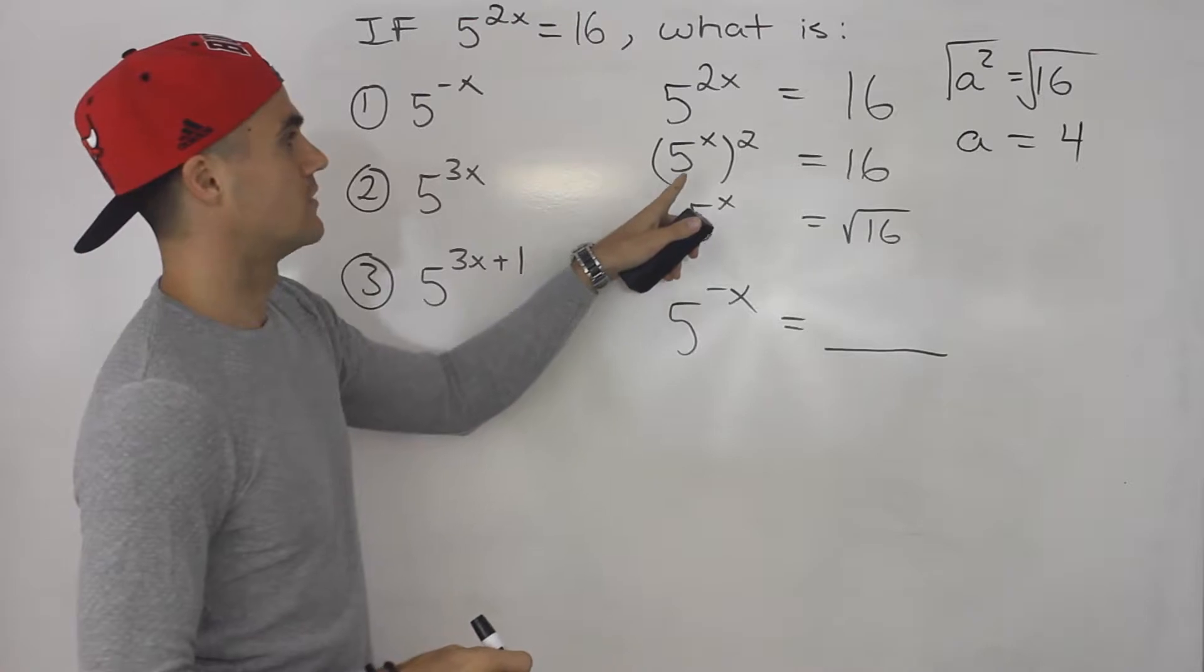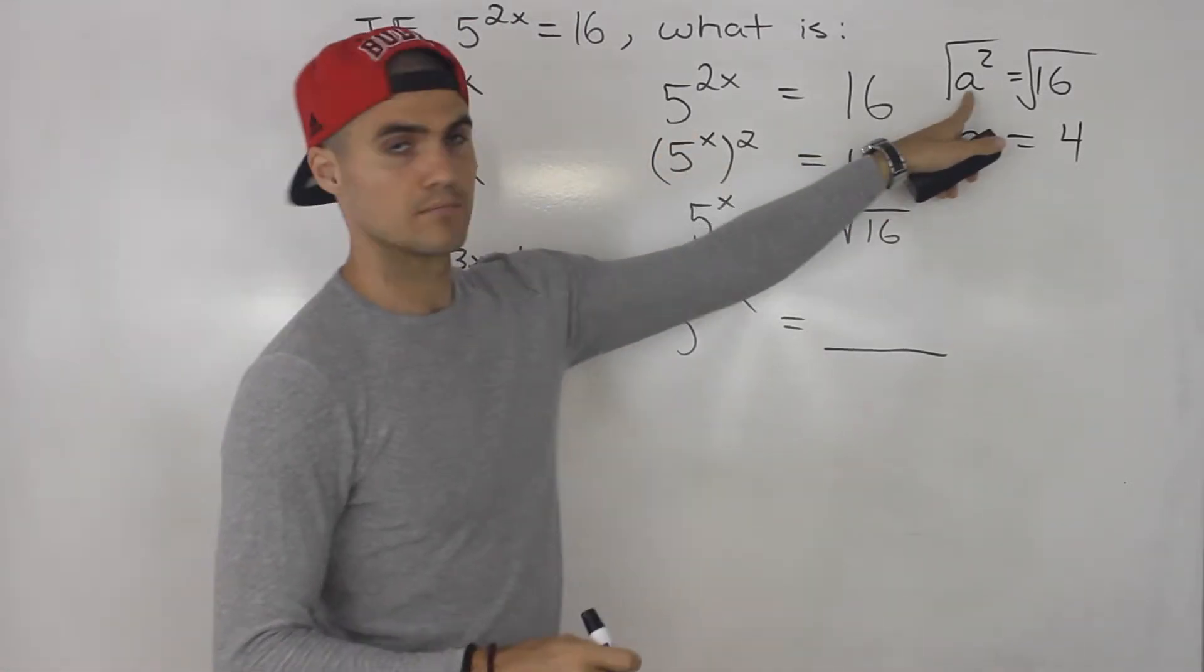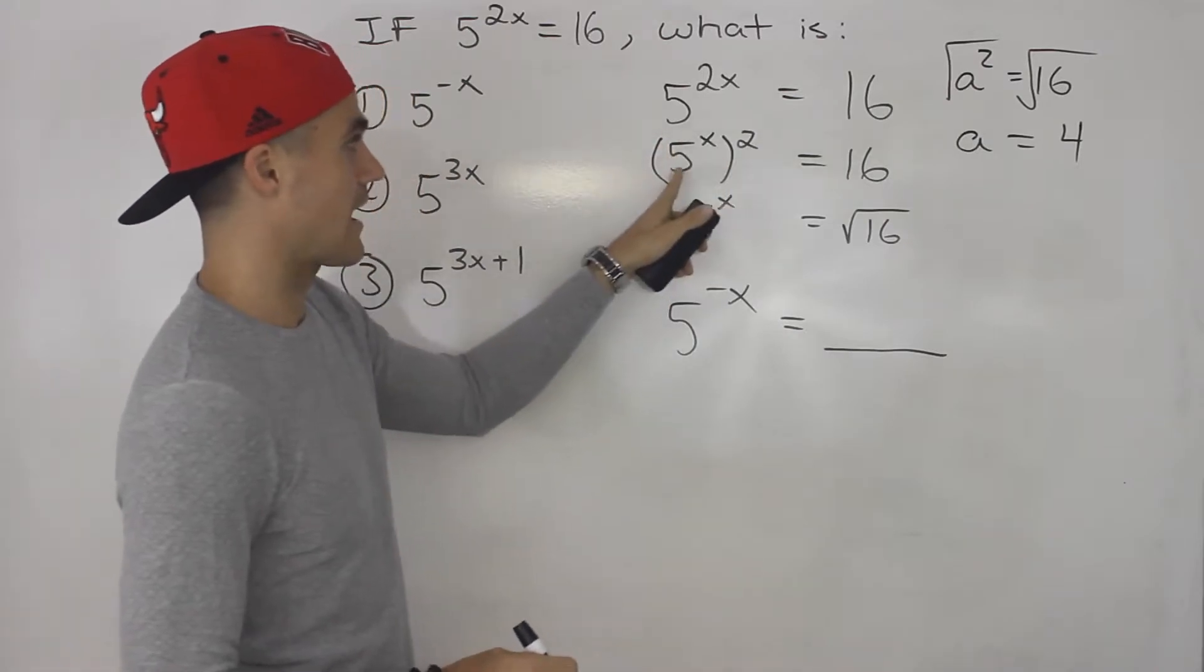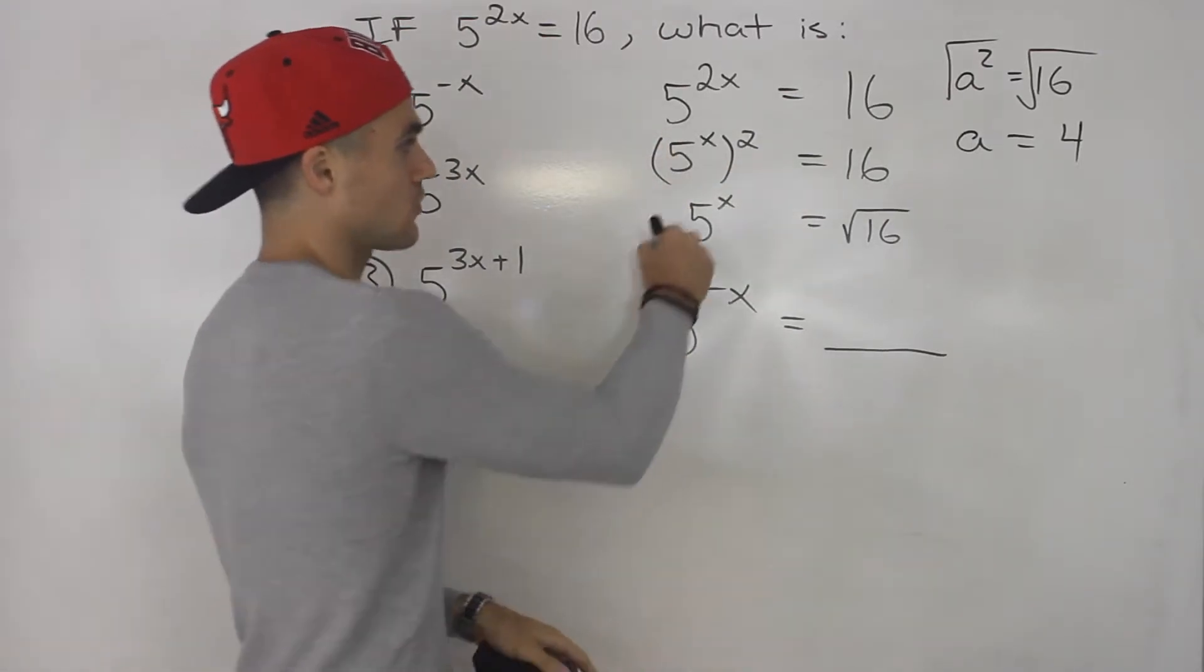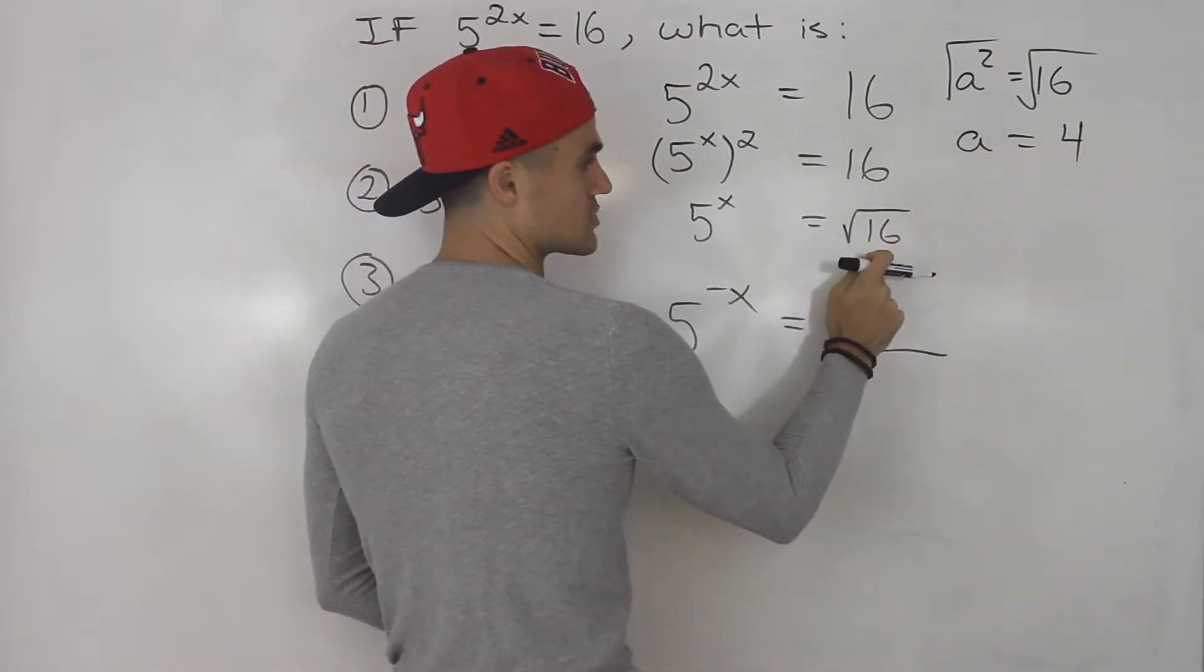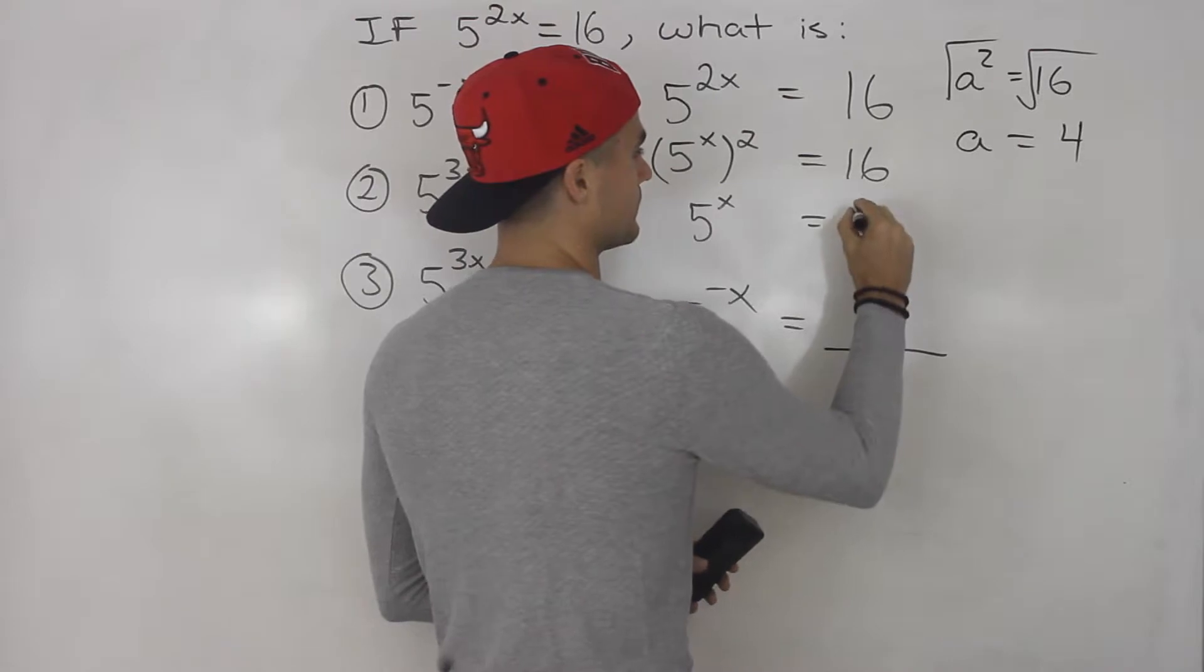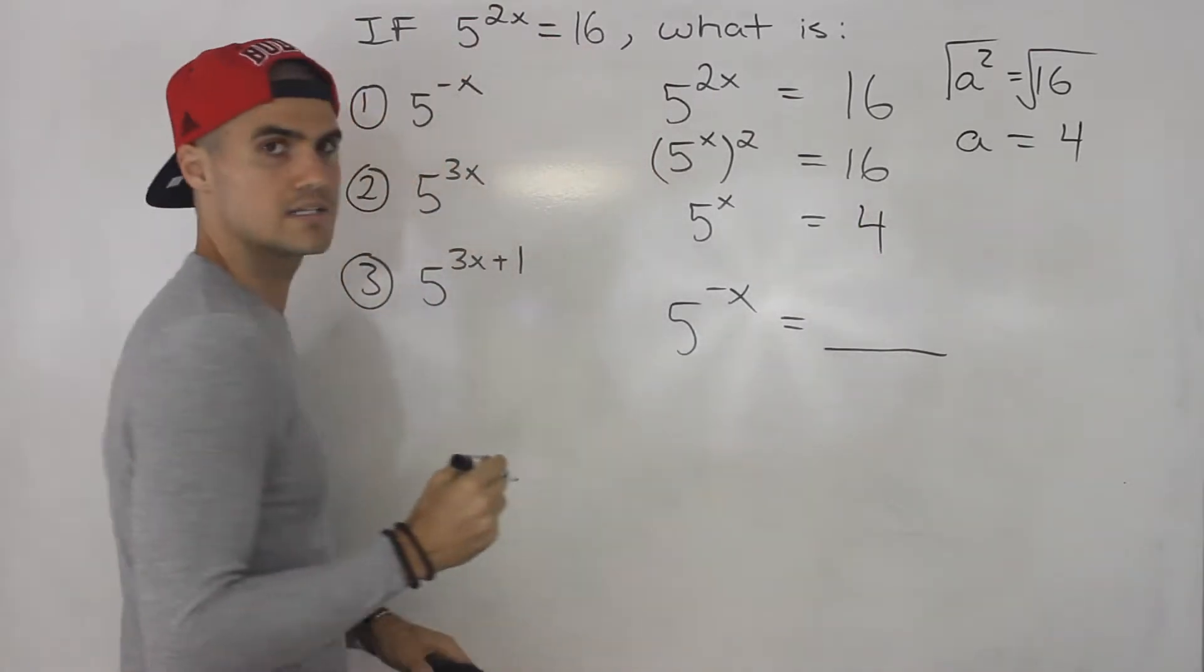So 5, this is like the a, basically, right? So 5 to the x squared is equal to 16, square root both sides, so that means 5 to the power of x is equal to the square root of 16, which is equal to 4. Right? Does that make sense?